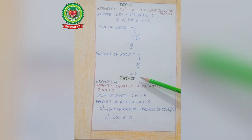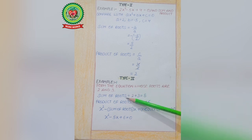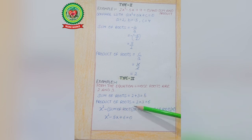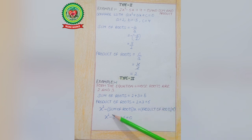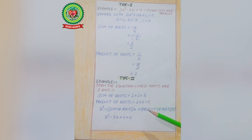Now Type 2 — Form the equation. The Roots are given and we have to form the equation. In this type, the Roots are 2 and 3. Sum of Roots: 2 + 3 = 5. Product of Roots: 2 × 3 = 6. The equation is x² − (Sum of Roots)x + (Product of Roots) = 0. Filling in the values, the required equation is x² − 5x + 6 = 0. This is Type 2.